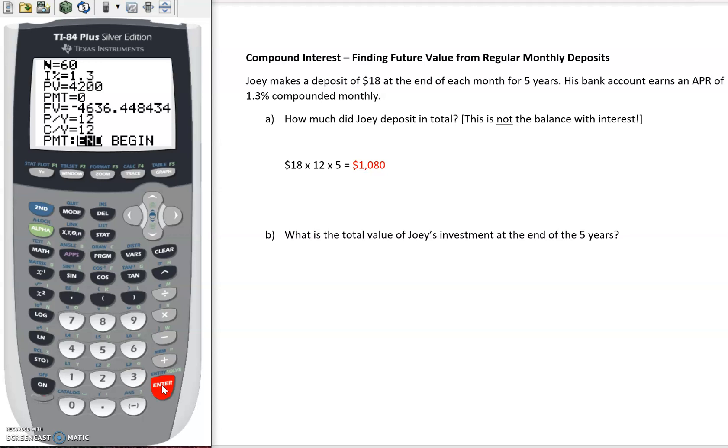Our present value—well, in this case there was no initial money already in the account. So all we're doing is making these regular payments. So our present value is zero, but we are making payments of $18.